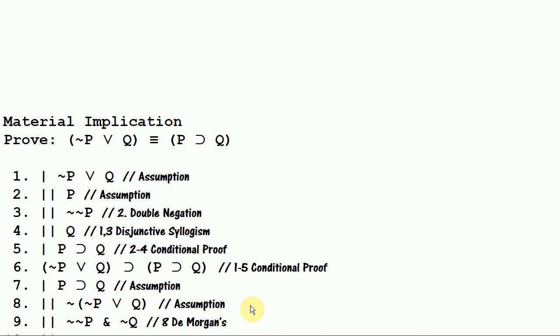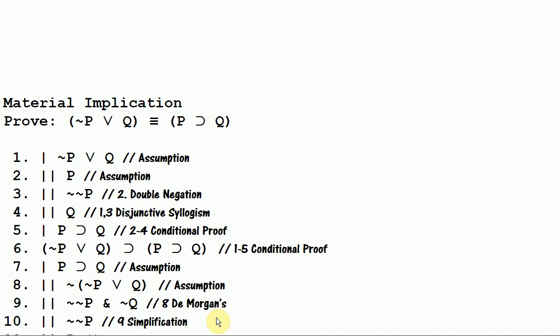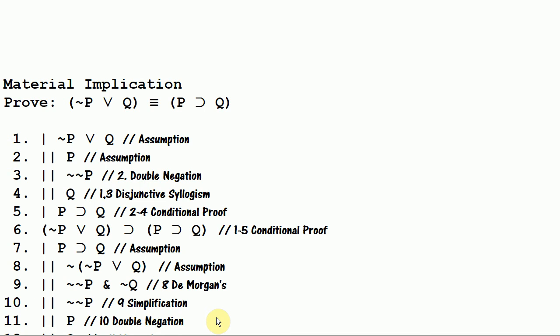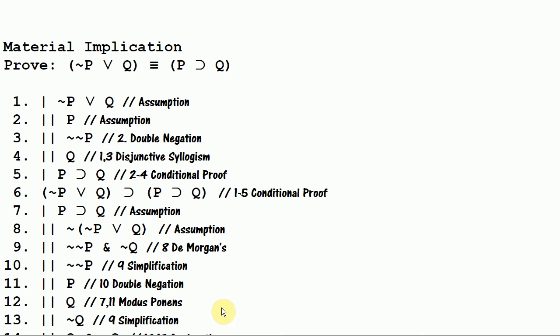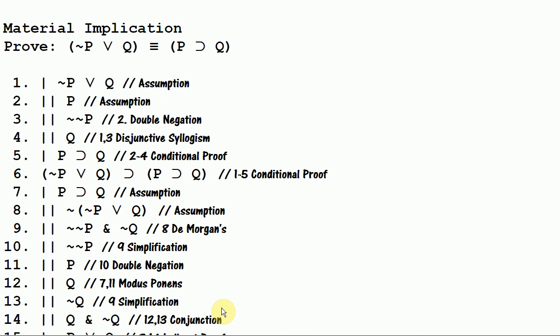And we get not not P and not Q. And that gives us things we can simplify and work with. We'll need not not P anyway, and we get P through double negation. And then we get Q through modus ponens. And then we have not Q. And then we get Q and not Q through conjunction.